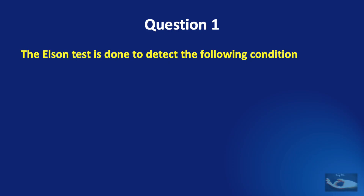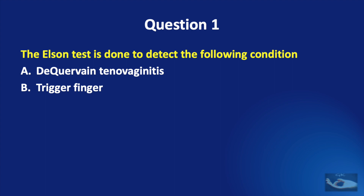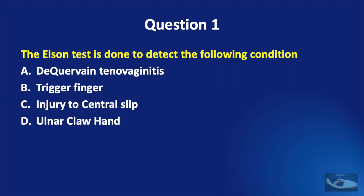Question number one. The Elson test is done to detect the following condition: de Quervain's stenosing tenosynovitis, trigger finger, injury to the central slip, or ulnar claw hand?